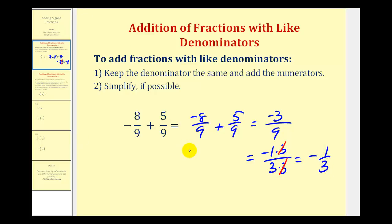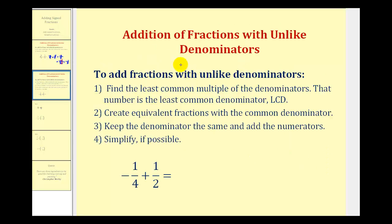In order to add fractions, we do have to have a common denominator. So if we have fractions with different or unlike denominators, the first step is to find the least common multiple of the denominators — this is called the least common denominator, or LCD. Once we determine the LCD, we'll create equivalent fractions with that common denominator, keep the denominator the same, add the numerators, and then simplify if possible.